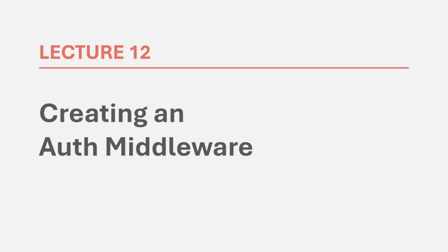In this lecture, we are going to create a middleware which is going to protect our protected routes from unauthorized access. The protected routes are those routes which should be accessible only to an authenticated user. The non-authenticated, non-logged-in user should not be able to access a protected route.